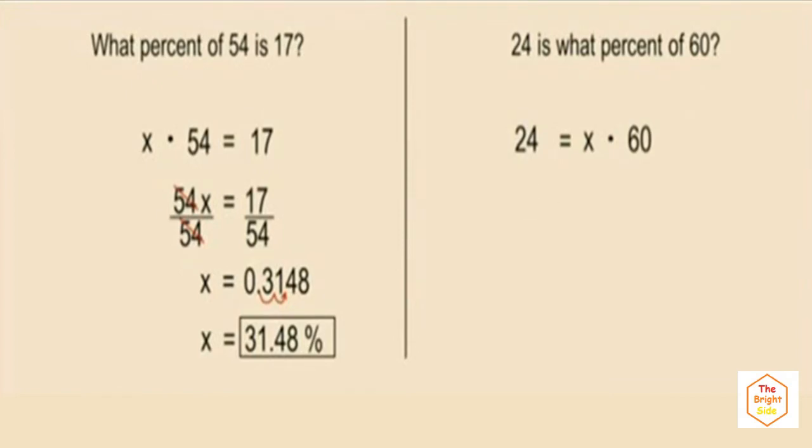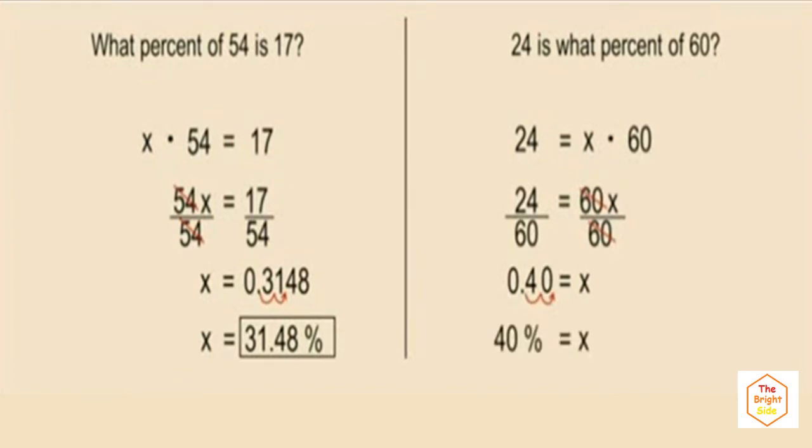24 equals x times 60, or 60 times x, 60x. To solve for x, we divide both sides by 60. And 24 divided by 60 is 0.4. That's 4 tenths. Now remember, our unknown quantity x represents a percent. That means our final answer has to be a percent. Therefore, we must change this decimal to a percent by moving the decimal two places to the right. And our answer is 40%.